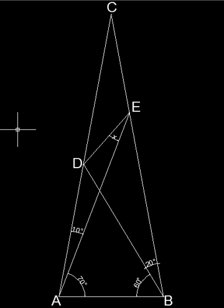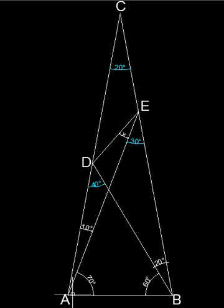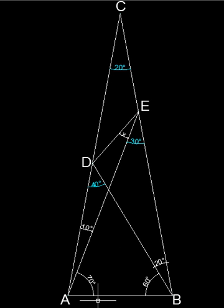We begin step number one. In triangle DAB, angle B is 60 degrees and angle A is 80 degrees, so what's left to reach 180 is 40 degrees — angle ADB is 40 degrees. In triangle ABE, angle A is 70 degrees and angle B is 80 degrees, so what's left is 30 degrees — angle AEB is 30 degrees. In triangle ABC, the big one, angle A is 80 degrees and angle B is 80 degrees, so angle C is 20 degrees. That's step number one.